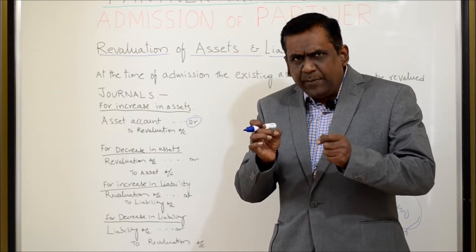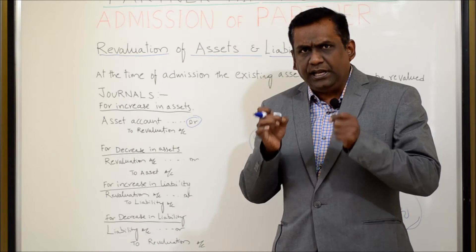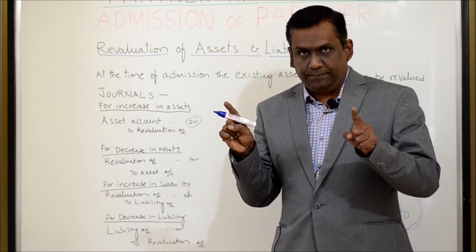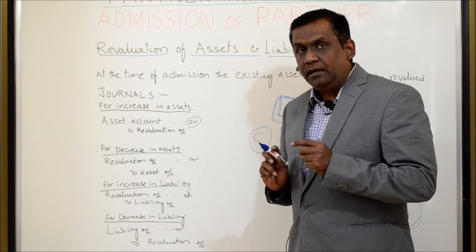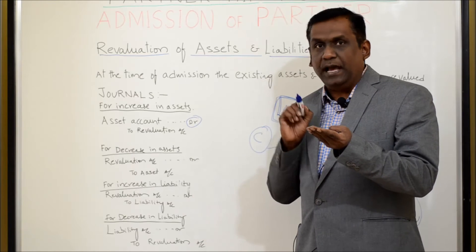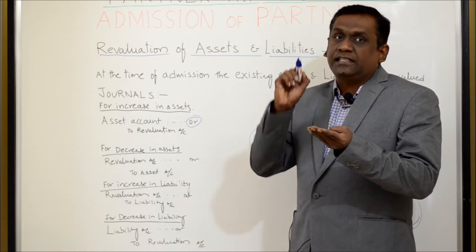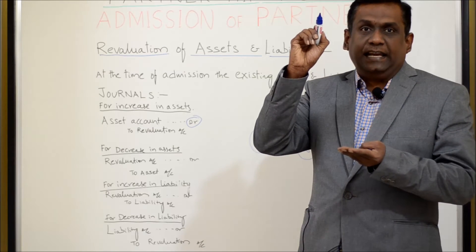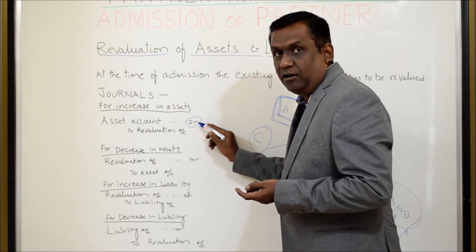If you know the fundamental reason behind debiting and crediting, you will never forget the journal entries. So why am I debiting the asset here? Because the asset value is increased. Asset is a debit balance — if I need to increase the debit balance, I need to debit again. That is the reason I am debiting the asset account.